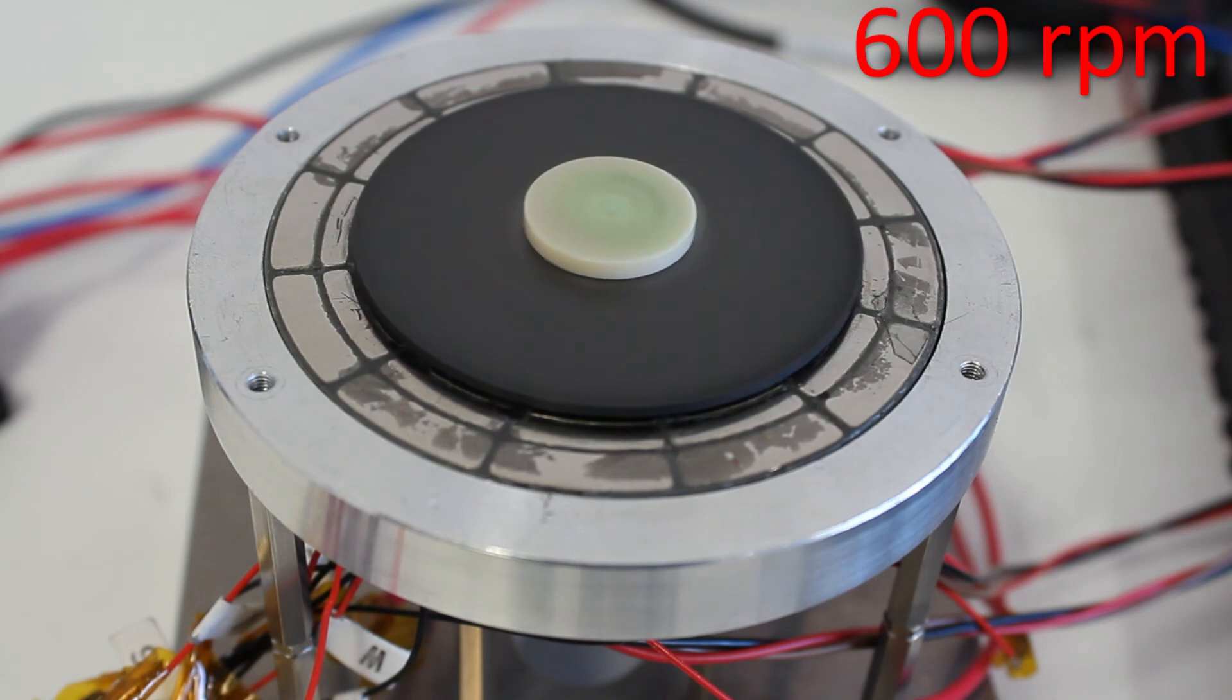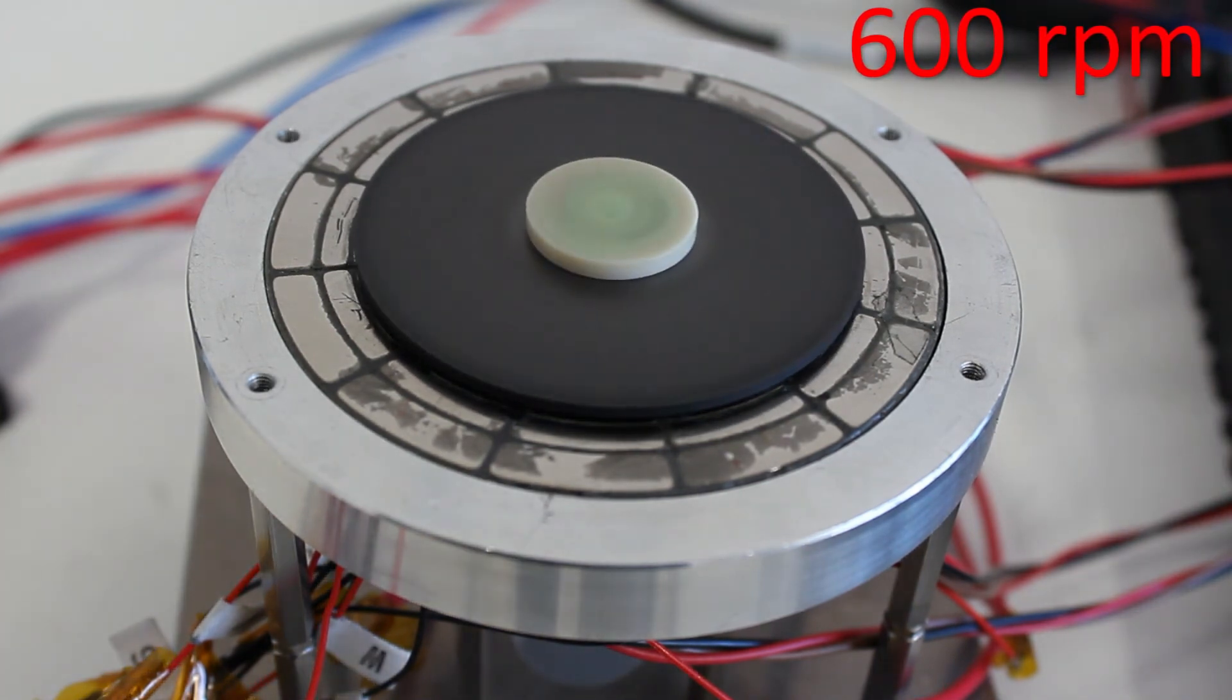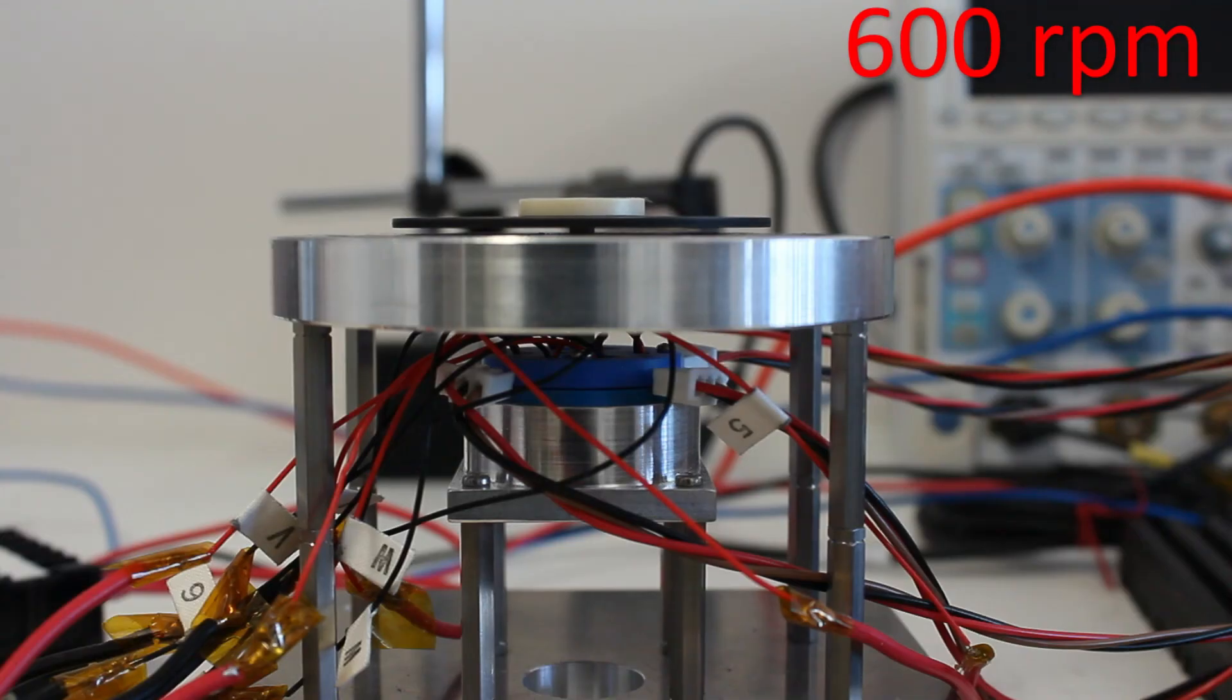Up to 600 rpm, despite the radial vibration, the rotor shaft remains in full non-contact levitation.